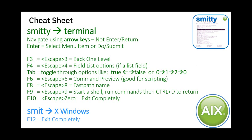Before we try out SMIT or SMITTY, a few facts to stop you making mistakes. When you have a panel up and are going between fields, navigate using the arrow keys — do not hit Enter. The Enter key, if you're in a menu of menus, selects the item you're on. But if you have a set of fields up, hitting Enter will execute whatever's in those fields, not go to the next field. Use the arrow key to get to the next field; once they're all right, then hit Enter.